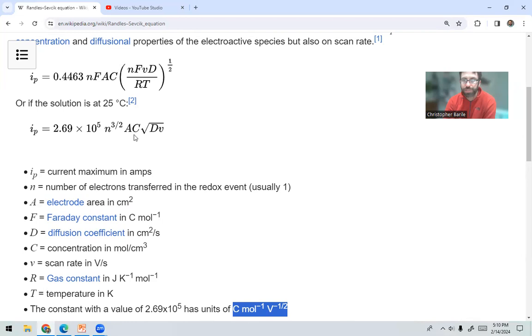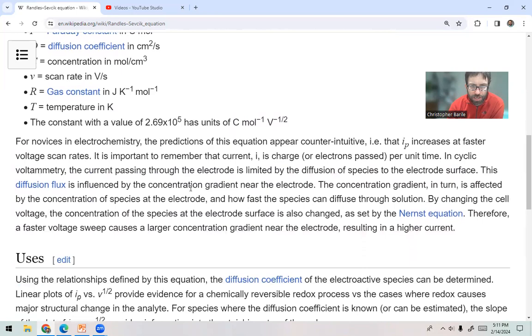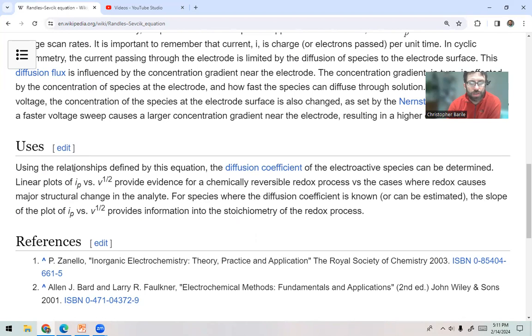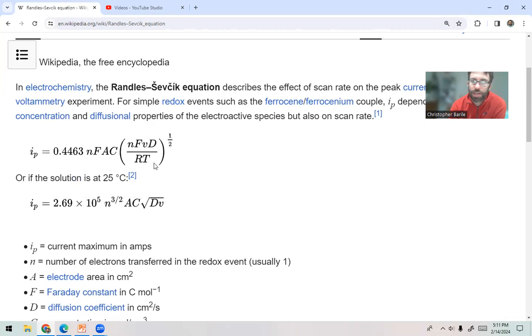So the real important part about this, and I think this Wikipedia does a good job about this equation from my standpoint, where we will use it in our group most frequently, is in this part, and I'm just going to read it. It says, using the relationships defined by this equation, the diffusion coefficient, can we turn around and talk about that, but this is really the important part. Linear plots of IP versus the square root of the scan rate provide evidence for a chemically reversible redox process. So if you get a nice behavior here, you get a fit to this, you can then figure out, hey, this is a nicely reversible reaction. It's occurring probably completely, and it's completing at a fast rate, a relatively fast rate.